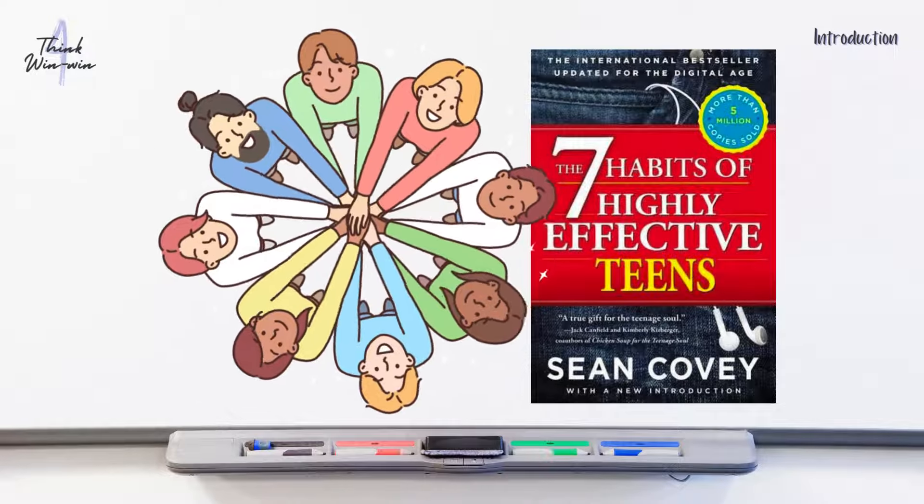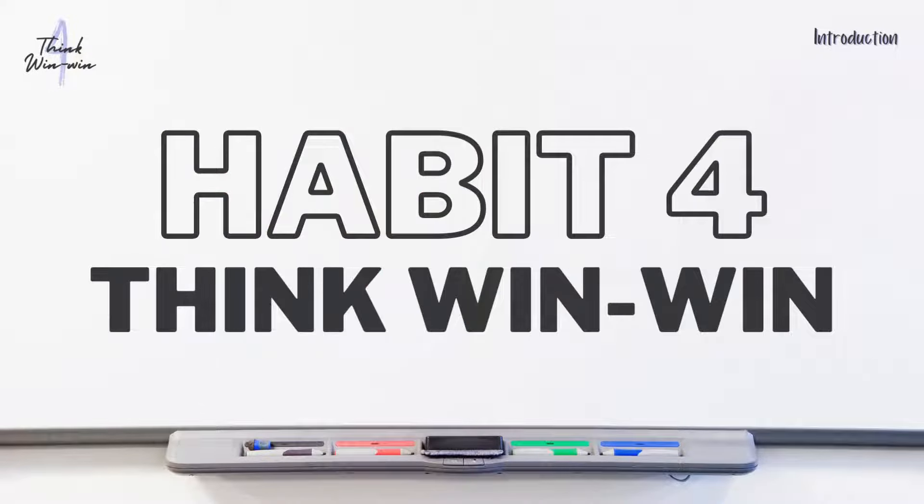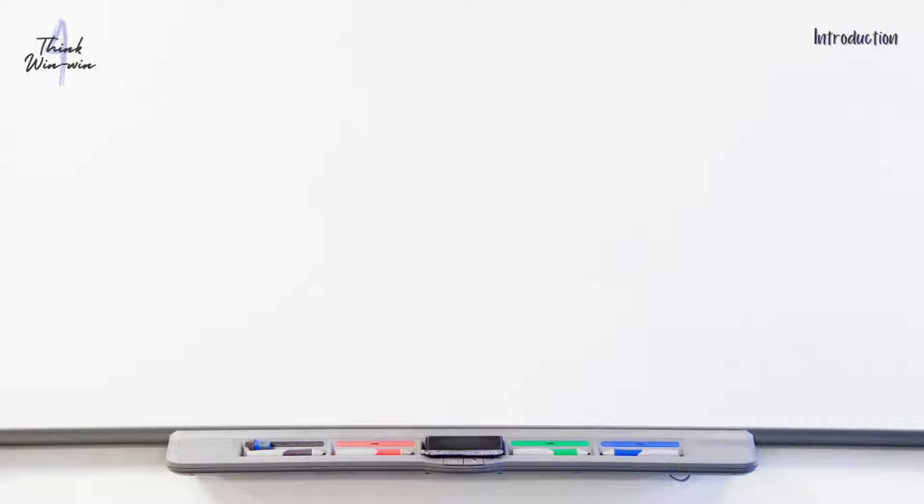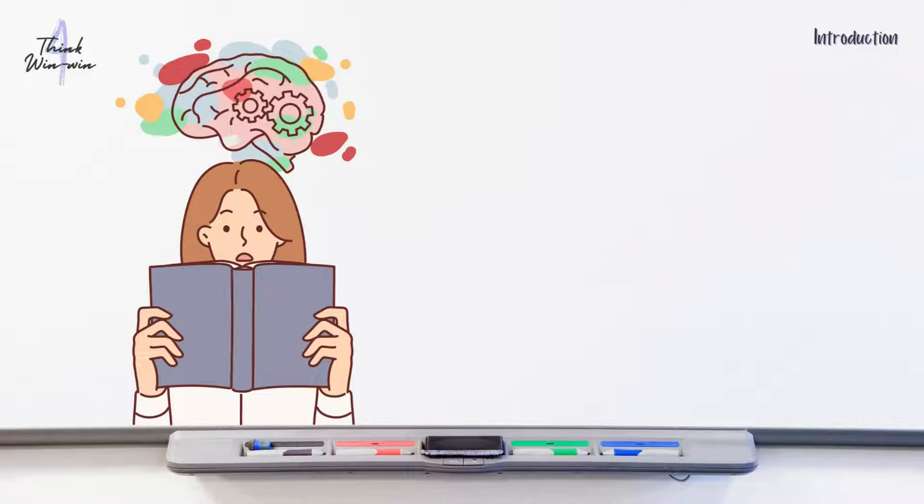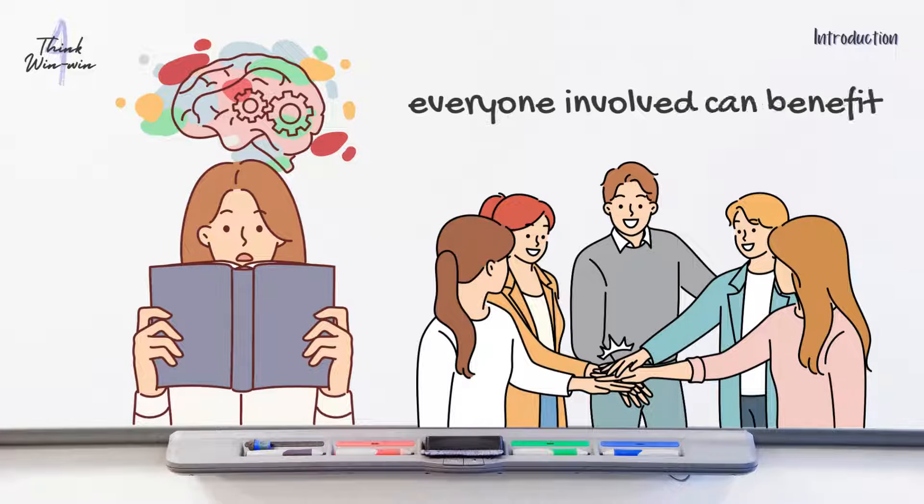Welcome to the animated summary of Habit 4, Think Win-Win from the book The 7 Habits of Highly Effective Teens by Sean Covey. In this habit, we'll explore the power of a positive mindset where everyone involved can benefit.